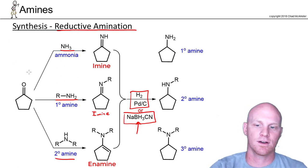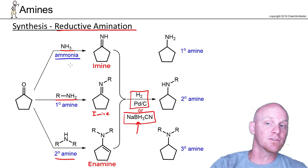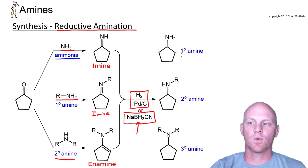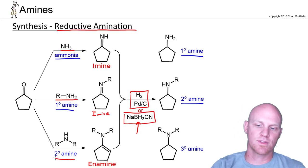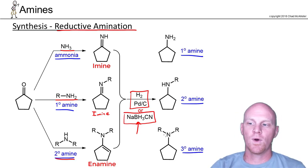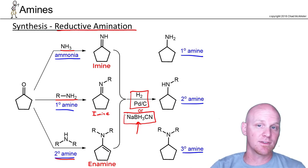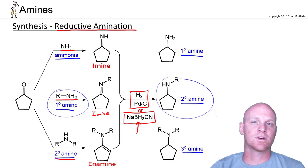The big thing to take a look at here: if you start with ammonia, a completely unsubstituted amine, you end up with something one degree more substituted — a primary amine. If you start with a primary amine, you end up with a secondary amine. If you start with a secondary amine, you end up with a tertiary amine. So it's a great way to make any kind of substituted amine you want. Keep in mind your amine product is always one degree more substituted than the reactant amine you used.